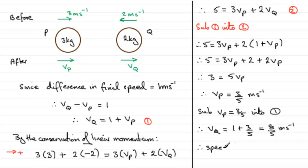Therefore we've just got to reply back to the question: what was the speed of P? Speed of P is equal to 3/5 meters per second, and speed of Q after the impact we found out was 8/5 meters per second.